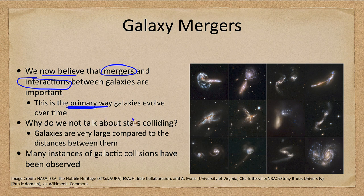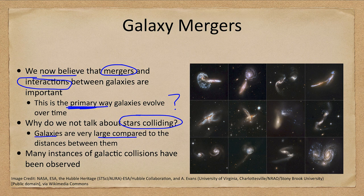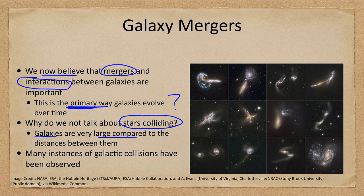We talk about galaxies colliding — but why do we never talk about stars colliding? That's because stars do not collide. Galaxies are very large compared to the distances between them, while stars are incredibly tiny compared to the distances between them. Imagine a room with a dozen beach balls bouncing around and never slowing down — they would collide with each other. That is roughly comparable to what a galaxy might be. If you also had a dozen BBs bouncing around that room, the odds of them bumping into each other are very, very small by comparison.